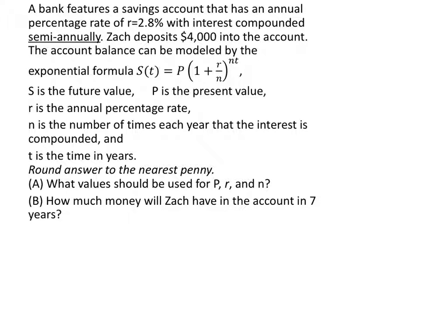Hey guys, this is Mr. Sal. We're going to go ahead and look at a word problem which involves some exponents in the equation or function. A bank features a savings account that has an annual percentage rate of R equals 2.8% with interest compounded semi-annually, meaning that it will compound twice every year. Zach deposits $4,000 into the account, and the account balance can be modeled by this exponential formula.